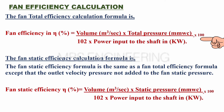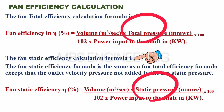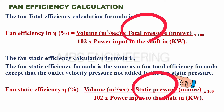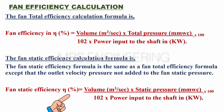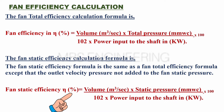The fan static efficiency calculation formula is the same as the fan total efficiency formula, except that the outlet velocity pressure is not added to the fan static pressure. The fan static efficiency eta, in percentage, is equal to volume in cubic meters per second, multiplied by static pressure in mmWC, multiplied by 100, and then divided by 102, into power input to the shaft in kilowatts.